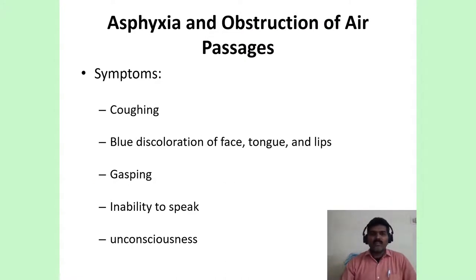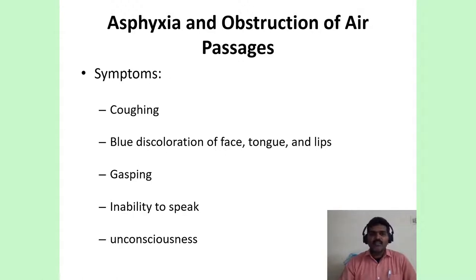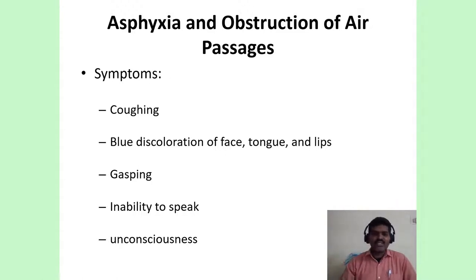Now we will get into the major illnesses that a first aid provider can help with. Most common is asphyxia, or obstruction of air passages, which can be sudden — for example, when a person is eating and has a foreign body obstruction. Symptoms of foreign body airway obstruction include sudden onset of profuse cough, decreased oxygen to the brain, and discoloration to blue called cyanosis, seen over the face especially the tip of the nose, tongue, and lips. The patient will be gasping for breath, unable to speak, and over time may become unconscious.